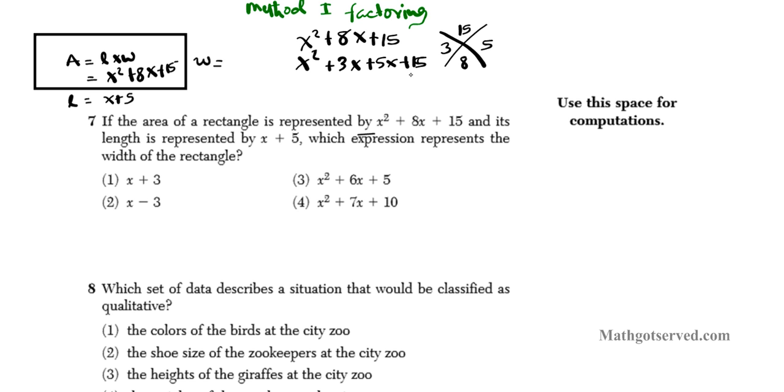So what we are going to do now is factor by grouping. So from the first two I can take out an x, I am left with x plus 3. And then from the next two I will take out the 5, and I am left with x plus 3. So our factored form is x plus 3 times x plus 5. So you notice one of our factors is x plus 5, so the other factor x plus 3 has to be the width. So you can clearly see that our answer is option number 1.